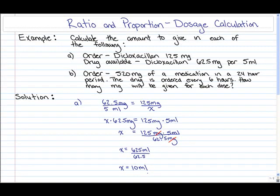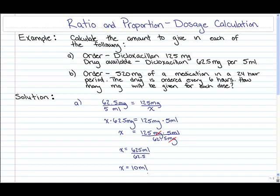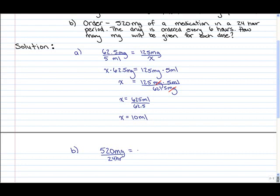So 10 milliliters is the amount to give for part A. Now for part B, if 520 milligrams of a medication in a 24-hour period is ordered, then how much would that be per hour? 520 milligrams over 24-hour period would work out to approximately 21.67 milligrams per hour.